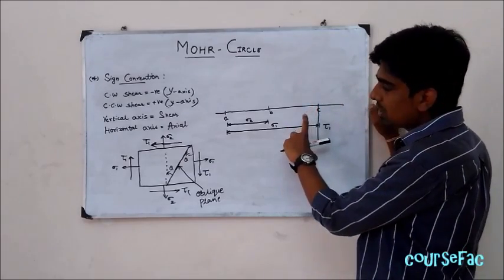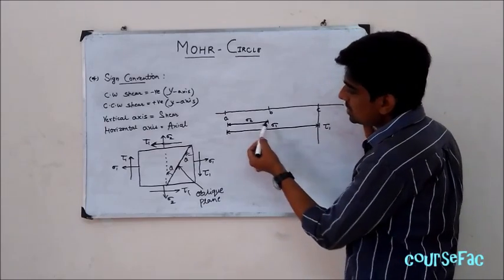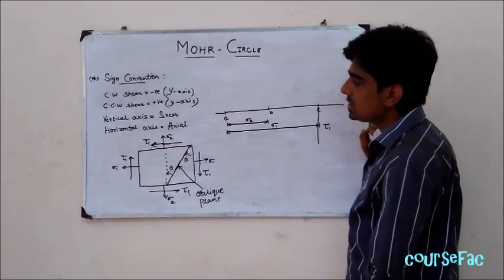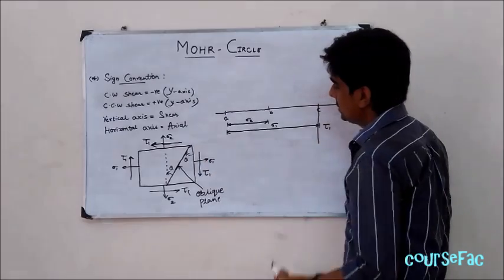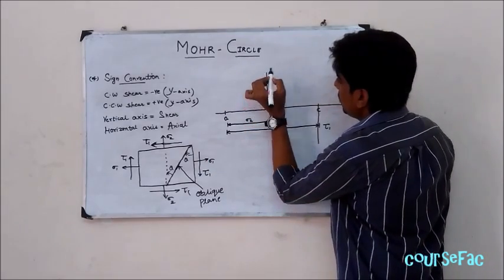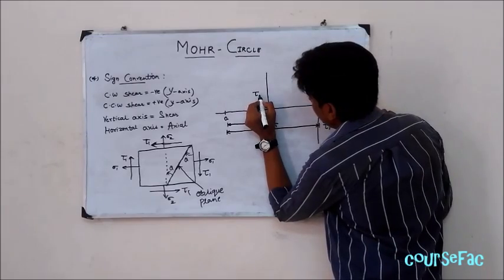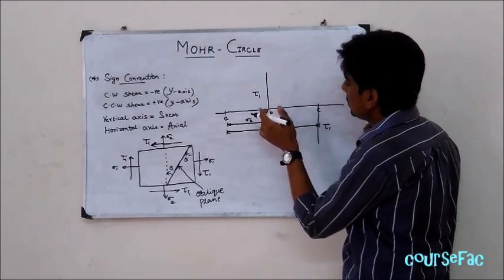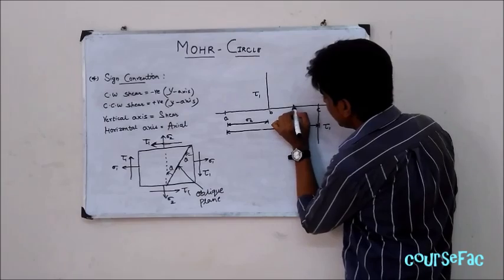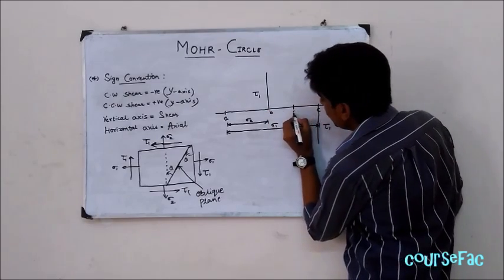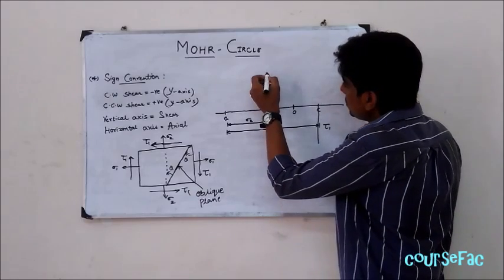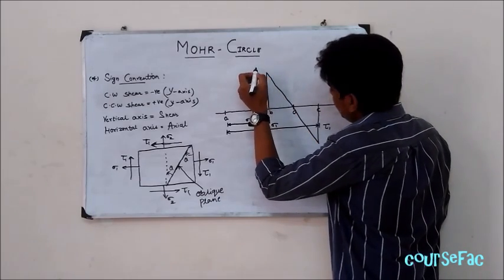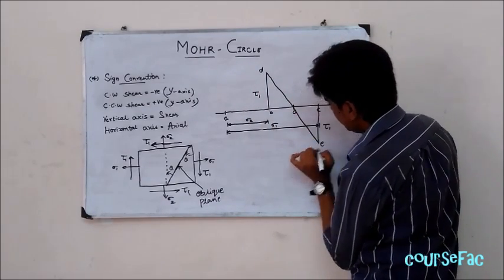Similarly, for sigma 2, the shear acts in a counterclockwise direction, and counterclockwise shear is taken as positive y-axis. We will bisect these two points using a compass. Let the midpoint of B and C be point O. We will then connect the two points through O, letting these points be D and E.